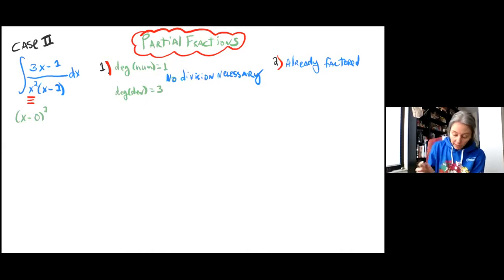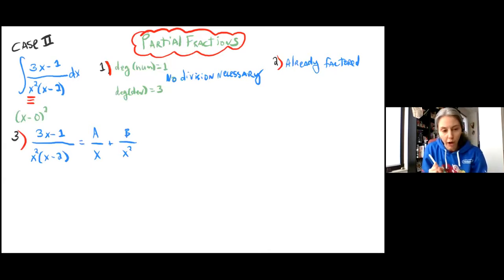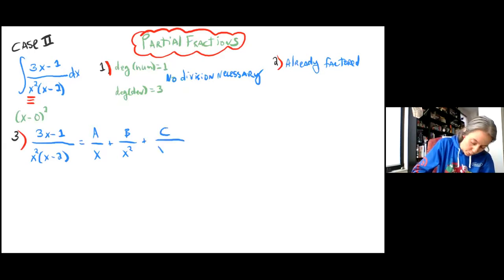So we are going to move on to step 3, which is to create our partial fractions decomposition. So we have 3x minus 1 over x squared times x minus 2. The x squared occurs 2 times, so we're going to have A over x plus B over x squared. It gets 2 fractions of its own, the degree of that x increasing each time. Plus C, x minus 2 occurs 1 time, so it only gets one fraction to itself.